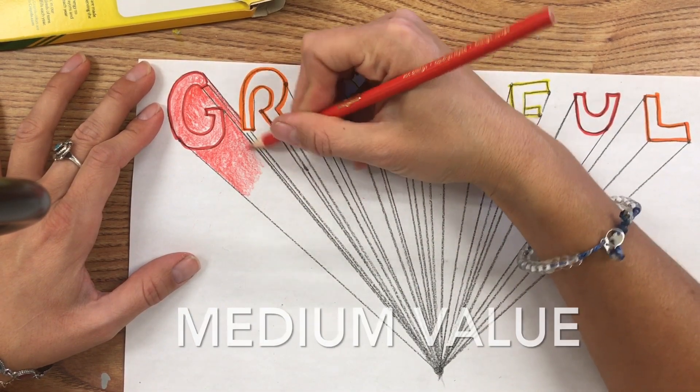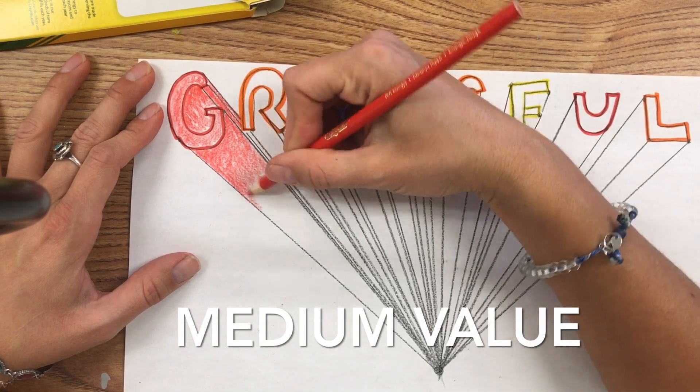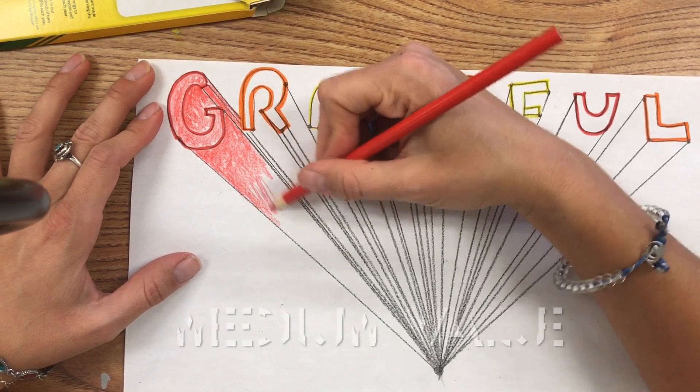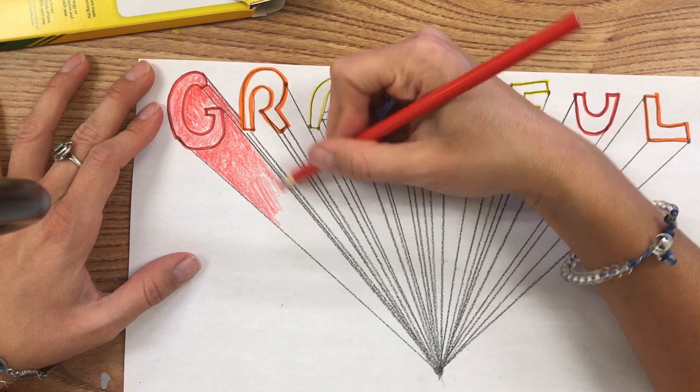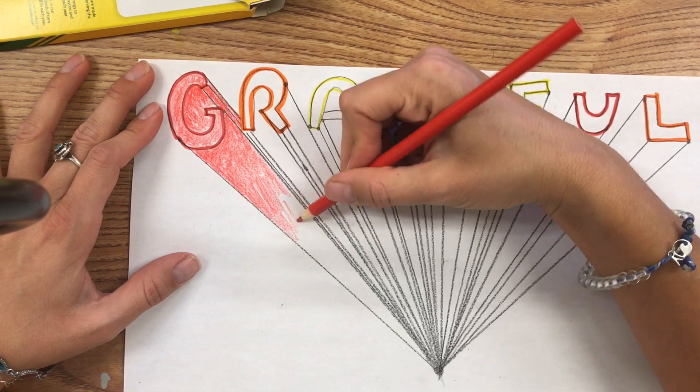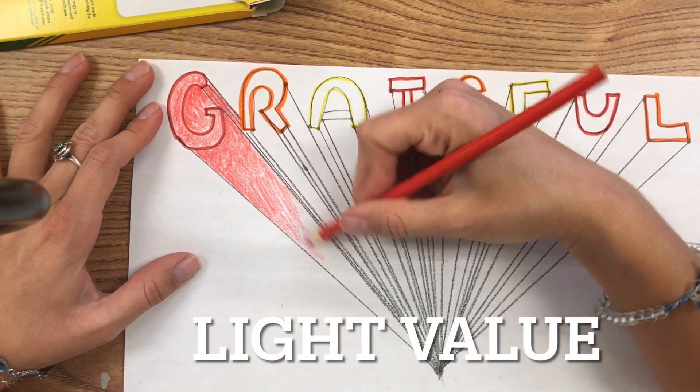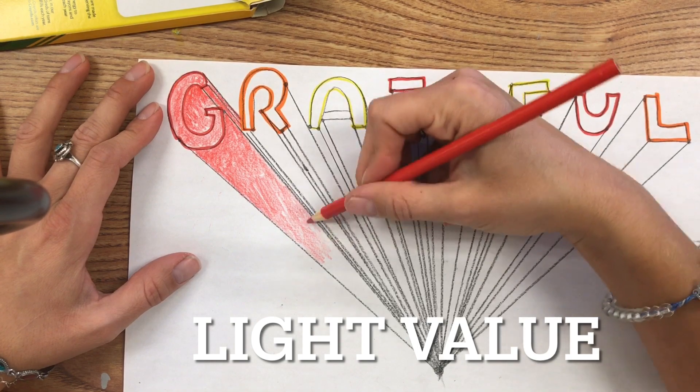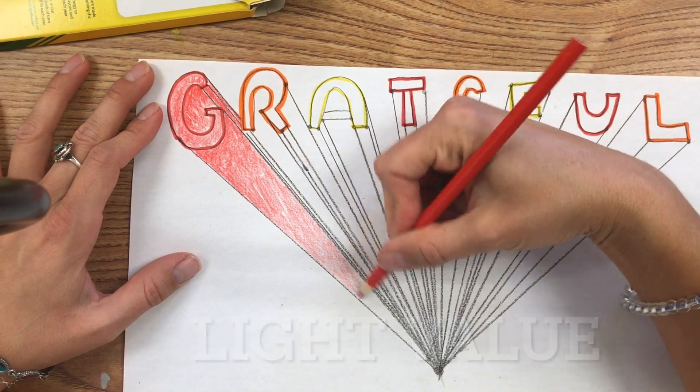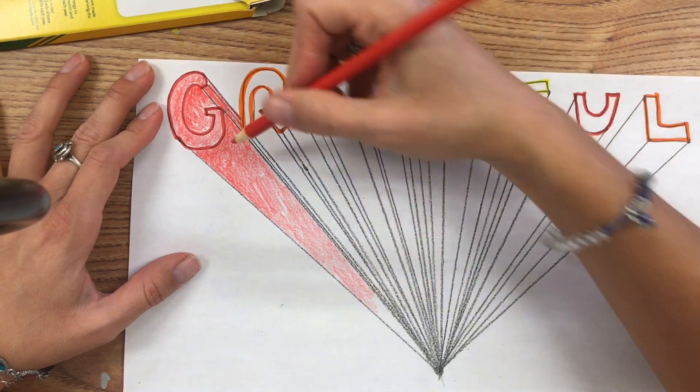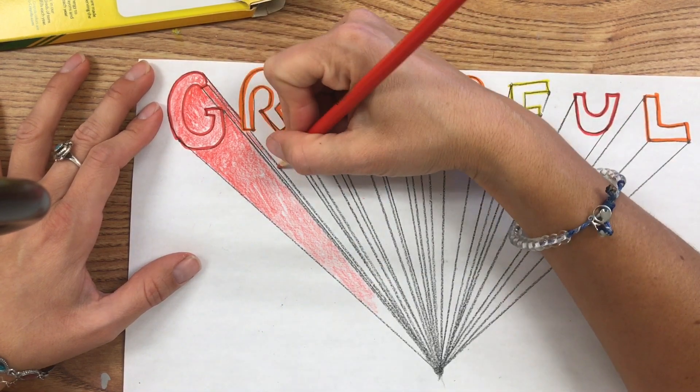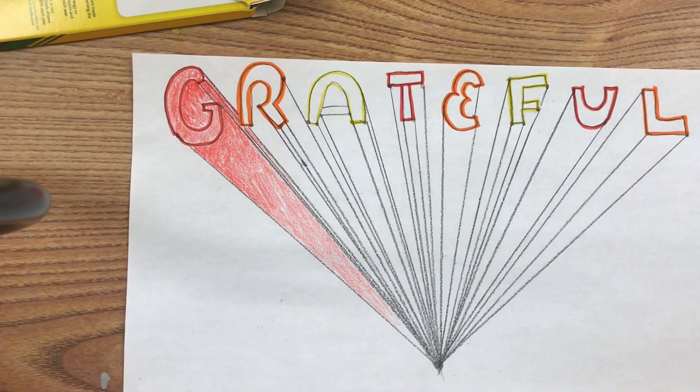I'm pressing very firmly with my colored pencil. As I get into a more medium section, a medium value, I'm going to release the pressure so I can get a medium value. As I get towards the bottom, I'm looking to do a light value. This is going to have a range of dark, medium, and light values. And that helps with the illusion.